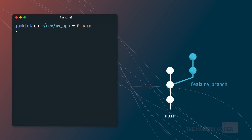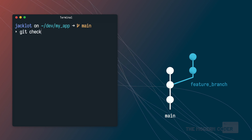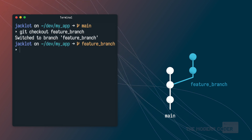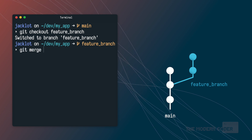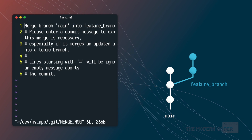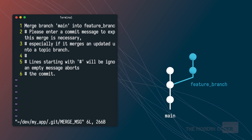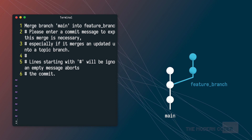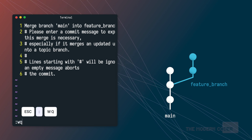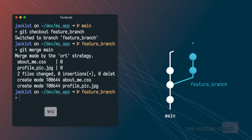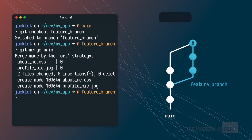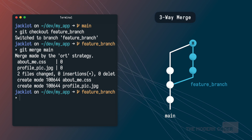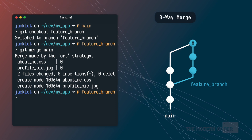This time, instead of checking out my main branch, I'll go ahead and check out my feature branch. Next, I'll run git merge main. Git will pop open that default terminal text editor again, and I'll optionally provide a merge commit message. I'll then run escape colon wq just like before, hit enter, and the result will be that same three-way merge commit, but it'll be placed on the tip of my feature branch instead of the tip of main.